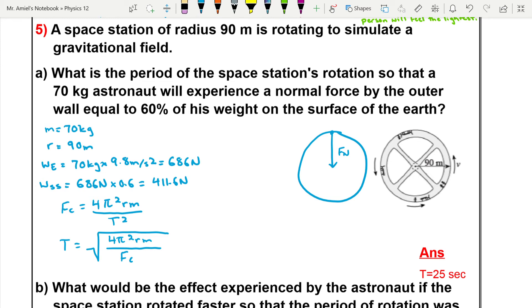And actually we can even make this better by saying that our force centripetal we know is equal to our force normal, and we know that force normal is going to be equal to the weight of the person on the space station.